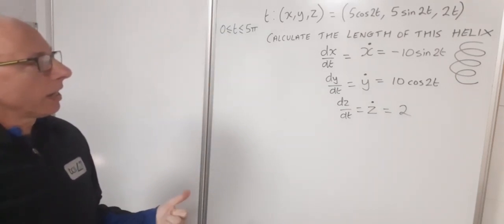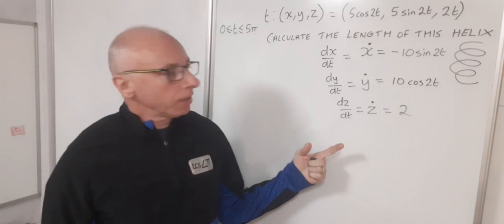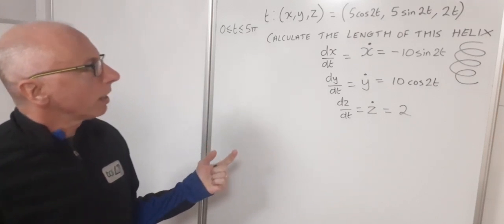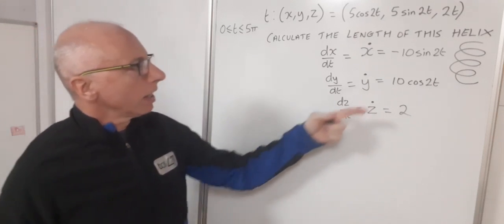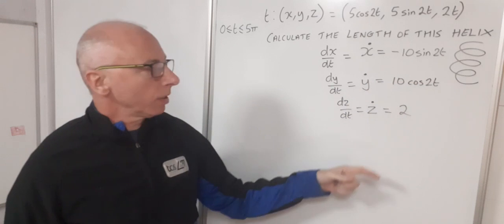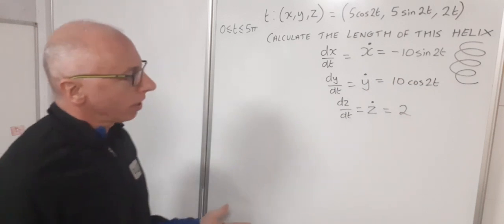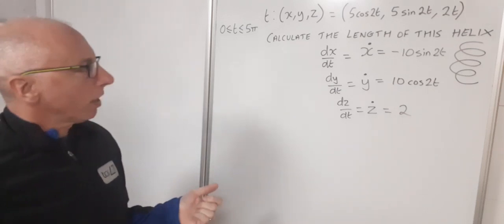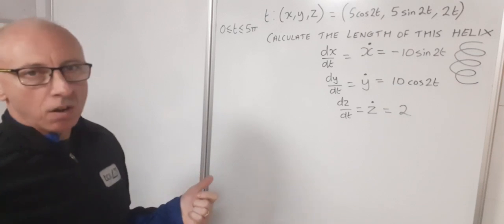Okay, so that's our derivatives. Now what we want to know is, are these derivatives continuous? Because that's another rule we need when calculating arc length. Now sine and cosine is continuous and two is a constant. So that's absolutely fine. So we're pretty well straightforward to go on now to calculate this arc length.